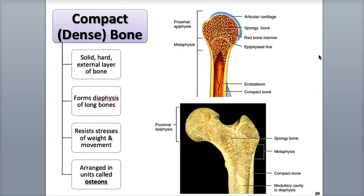When the person reaches the end of adolescence, the epiphyseal plates close, the chondrocytes stop dividing, and the remaining cartilage becomes bone. Growth can no longer occur. When this happens, the plate is now referred to as a bony landmark called the epiphyseal line.